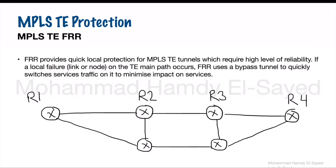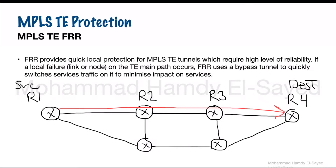In this example, we have R1 as the source node and R4 as the destination node, with an MPLS traffic engineering tunnel main path from R1 to R4 via R2 and R3. FRR can be configured on R2, which is a node on the main path, to protect a link or node.